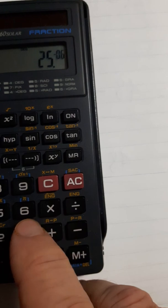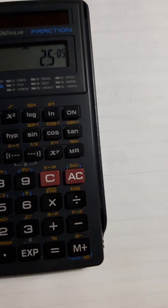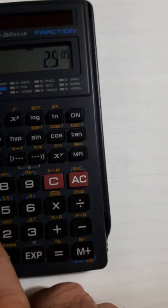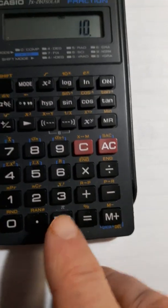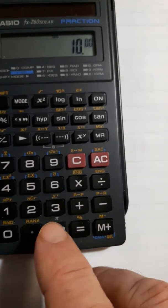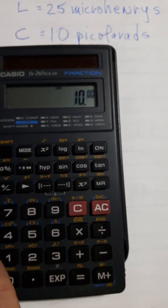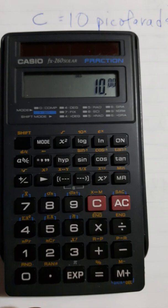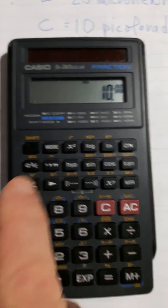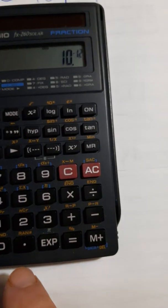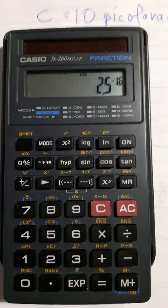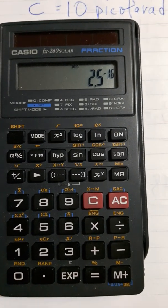Now we're going to multiply by times here, 10, and picofarads, so we're going to go EXP, and pico is 12, minus 12, right, 10 to the minus 12, so change sign, 1, 2, and we're going to say equals. So that multiplied the two of them, we multiplied L by C.